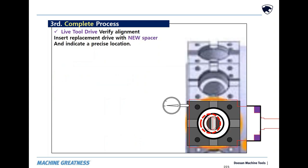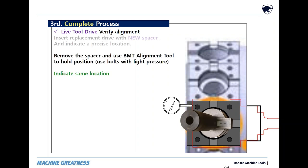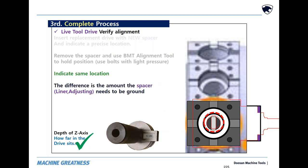To use a BMT alignment tool for all three positions, start with positioning the depth of Z. Place the new drive and new spacer in the turret with the bolts seated and set relative zero at that position. Disassemble and remove the spacer. Lightly use the bolts for support while positioning the alignment tool's tang vertical. Indicate the same position. Grind the spacer by the difference of the two measurements. Install the live drive with bolts loose and Z is done.